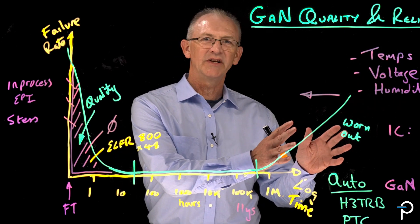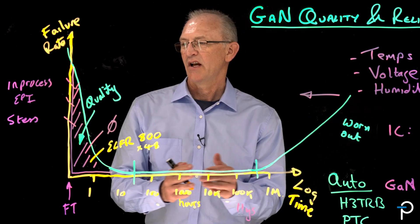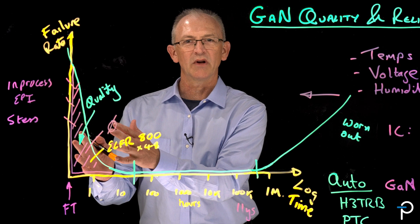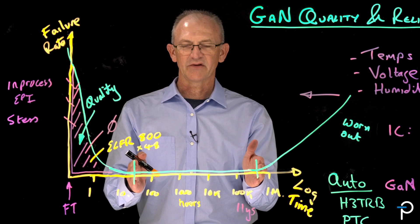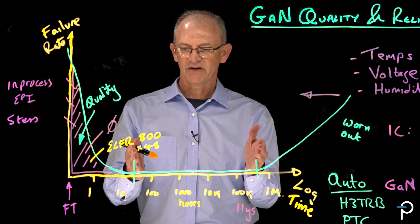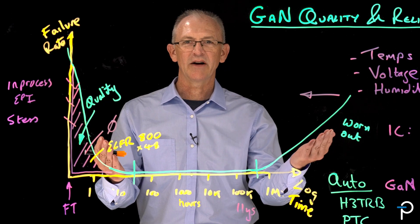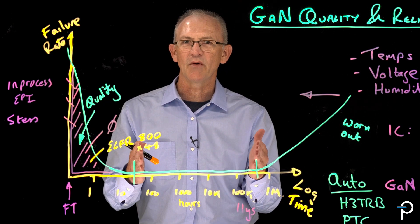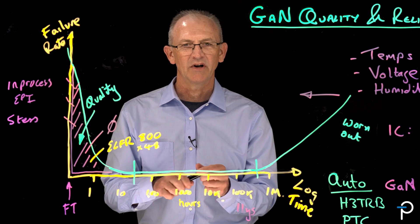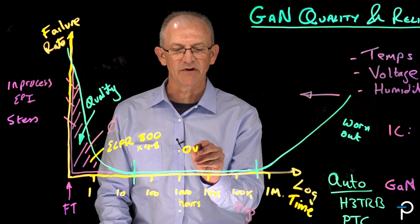So we've spoken about reliability and wear out mechanisms and how we guarantee initial quality. But we've got a middle section here. These are parts that are perfectly good. They've been manufactured perfectly. They haven't worn out yet. But maybe they're dead anyway. What happened? Well, the answer is overstress.